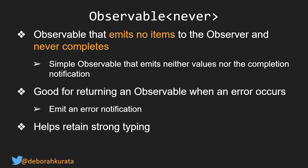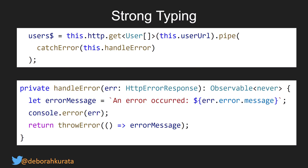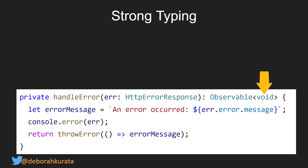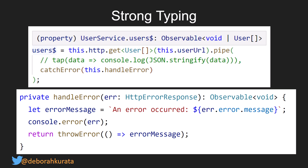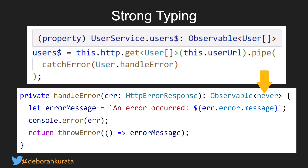Using observable of NEVER helps retain strong typing. Here we're using a declarative approach to define our HTTP GET and assign it to a variable. In our catchError, if an error occurs, we return an observable of NEVER. If we instead used observable of void, null, or undefined, when we hovered over users$, we would see it typed as observable of void or UserArray, null or UserArray, etc. — mucking with our strong typing. By using observable of NEVER, users$ retains the type observable of UserArray.